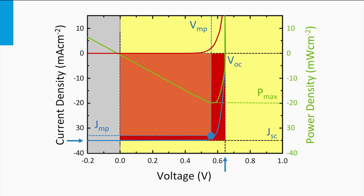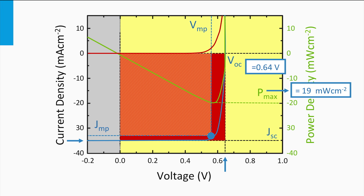Let's get a feeling for typical values. Looking at an example JV curve measured under standard test conditions representing a typical crystalline silicon solar cell: the maximum power density is 90 mW per square centimeter, which on the standard irradiance of 100 mW per square centimeter gives a conversion efficiency of 19%. With an open circuit voltage of 0.64 volts and a short circuit current density of 35 mA per square centimeter, we arrive at a fill factor of 84.8%.